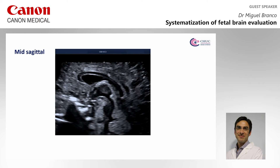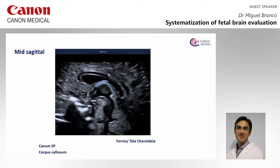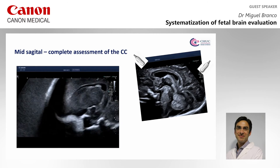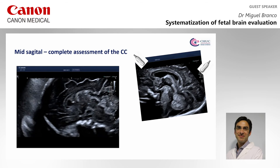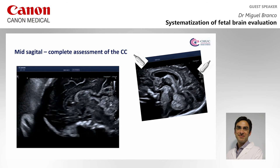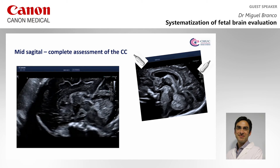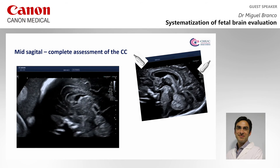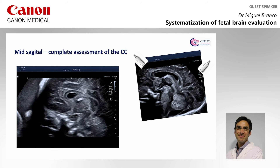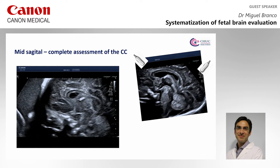In the mid-sagittal plane, we can identify the cavum septi pellucidi, the corpus callosum, the tela choroidea, the third ventricle, and the interthalamic adhesion. If we move the transducer from the anterior fontanella to the posterior fontanella, we will obtain better resolution of the rostrum and the splenium of the corpus callosum.